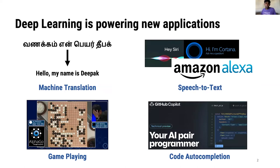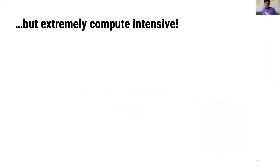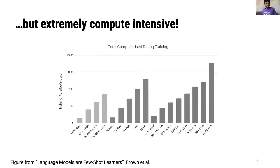Deep neural networks have helped generate state-of-the-art results across a broad range of applications including machine translation, speech-to-text, game playing, and even newer classes of applications such as code auto-completion. However, training modern models is extremely computationally expensive. This is a graph borrowed from the recent GPT-3 paper that shows the number of computer operations needed to train various natural language processing models. The largest GPT-3 model requires about 8 petaflops per second years of computation.